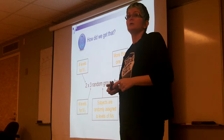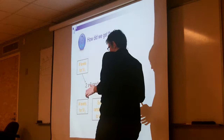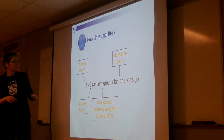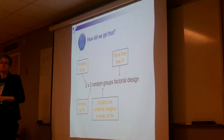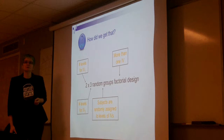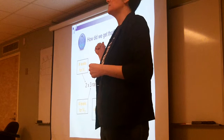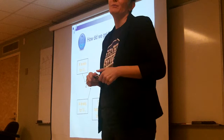This is a 2×3 random groups factorial design. The two and three come from the number of IVs and their levels — two IVs, one with two levels and one with three levels. This also immediately tells you the study had six different conditions (2 × 3 = 6). It's called random groups because random assignment was used for all variables. Any design with more than one IV is called a factorial design. Just from the label '2×3 random groups factorial design,' you know: two IVs, one with two levels, one with three, both between-subjects, both using random assignment.